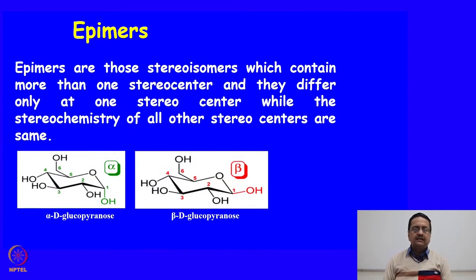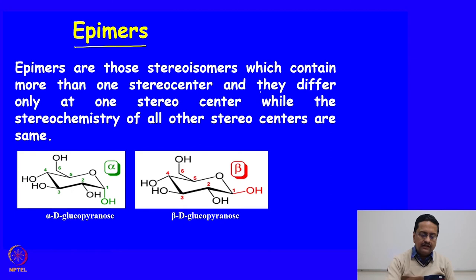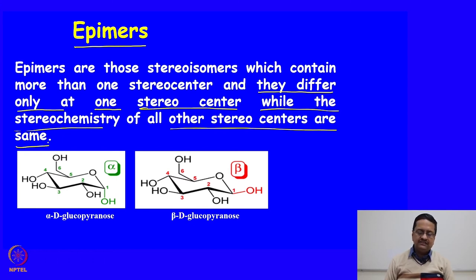Now we move to the next part of this course, where we will discuss other different possible isomerisms. We need to learn what epimers are. Epimers are compounds that contain more than one stereocenter and differ only at one stereocenter, while the stereochemistry of all other stereocenters is the same. If a compound has multiple stereocenters and all except one have the same R or S designation, those compounds are called epimers.